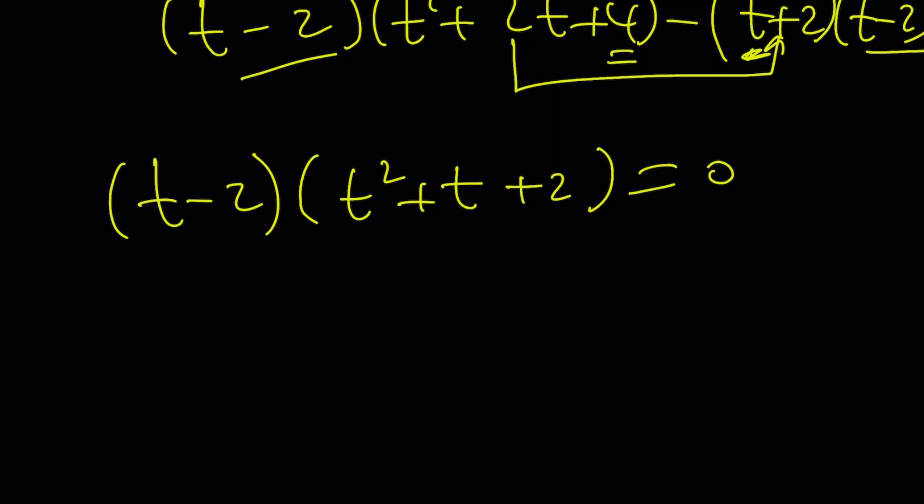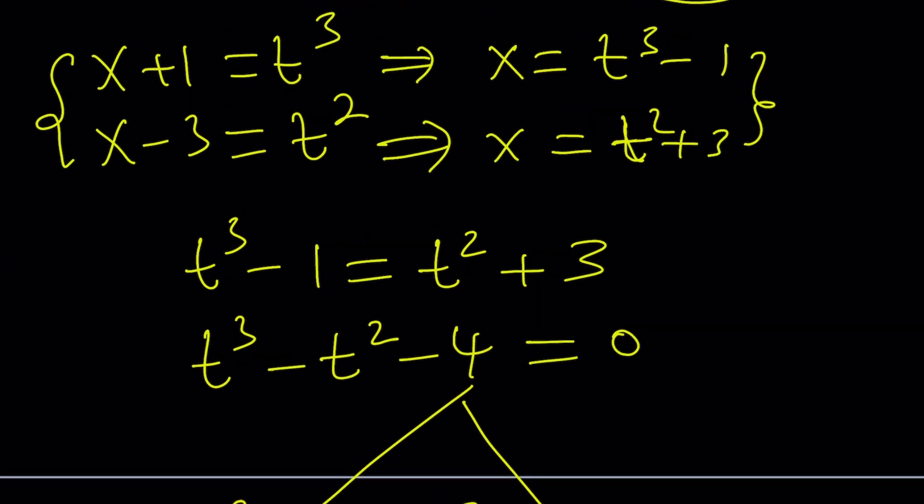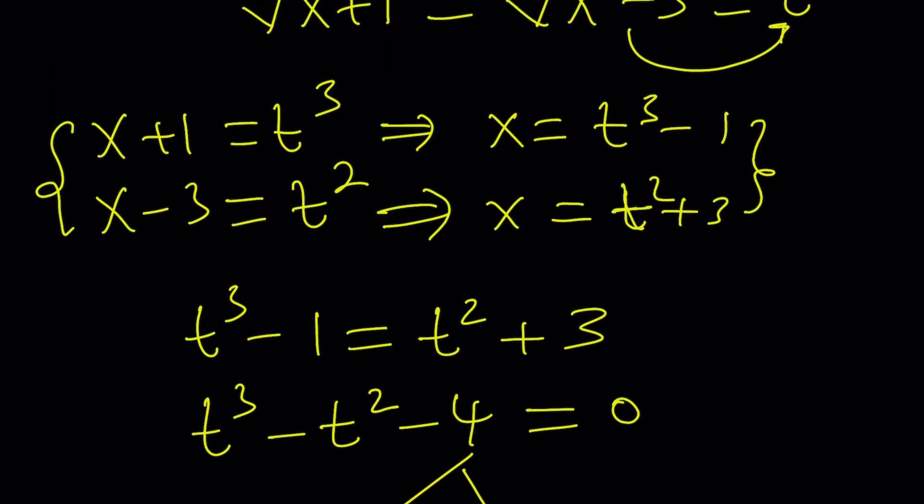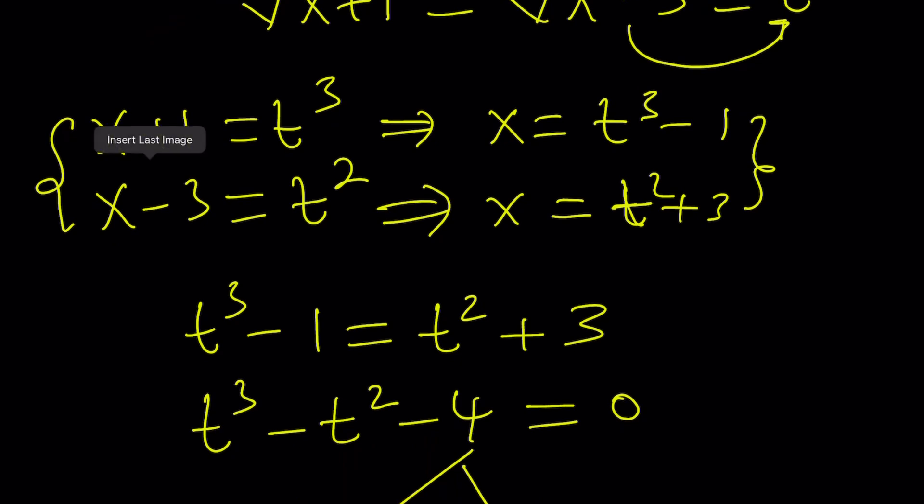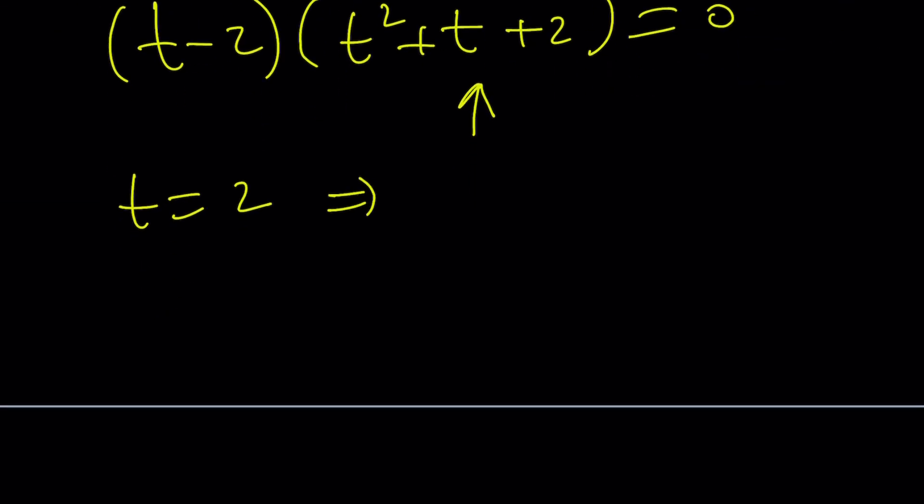You're going to get this equation and you're not going to get real solutions from here, but that's fine. But t equals 2 is going to be one of the values. x plus 1 is t cubed. So, t cubed is 8, x plus 1 is 8, x equals 7. So that gives us the real solution.